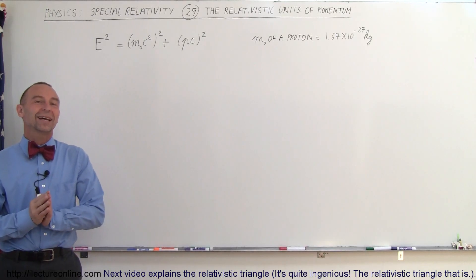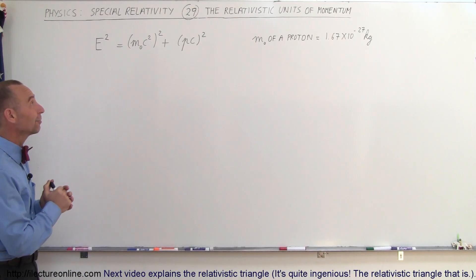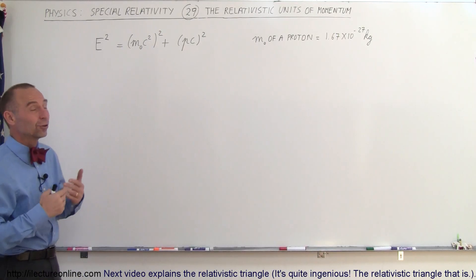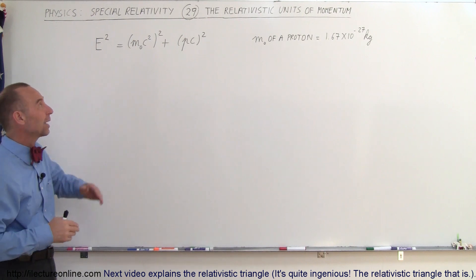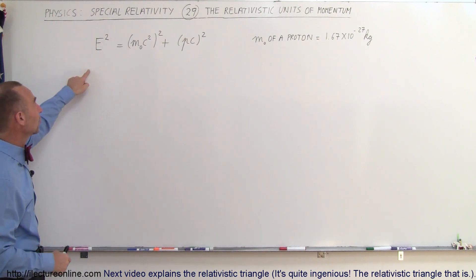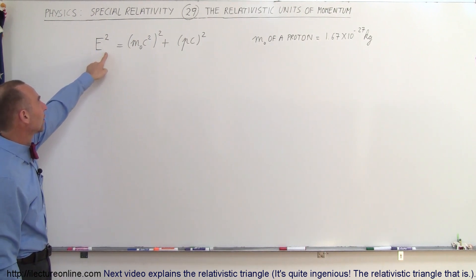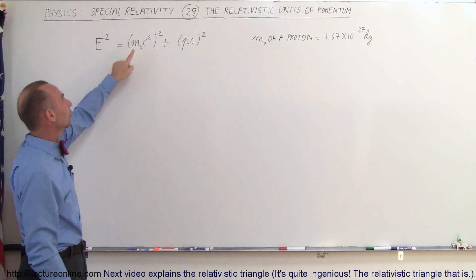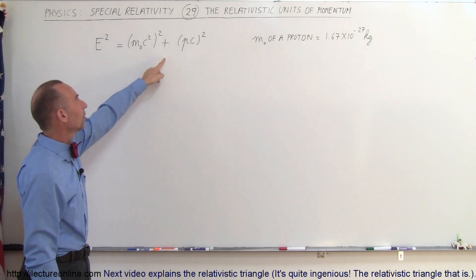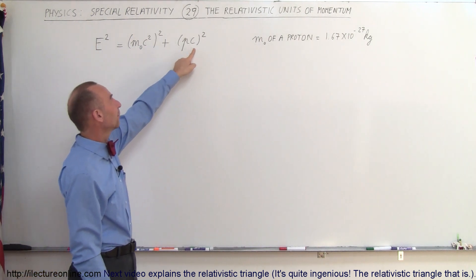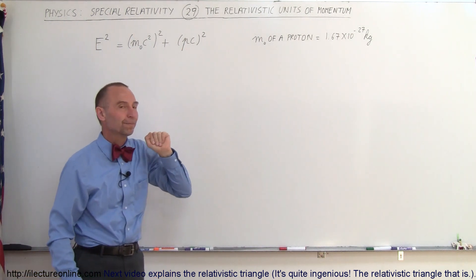Welcome to ElectronLine. In this video, we're going to show you how to find the relativistic units of momentum. Here we have the general equation where the total energy squared is equal to the rest mass energy squared plus the momentum times the speed of light, quantity squared.